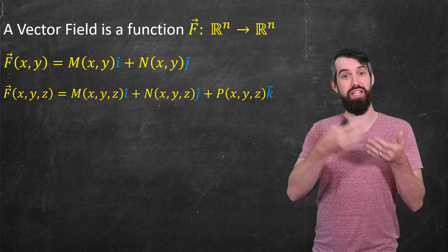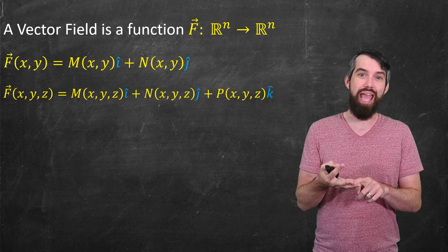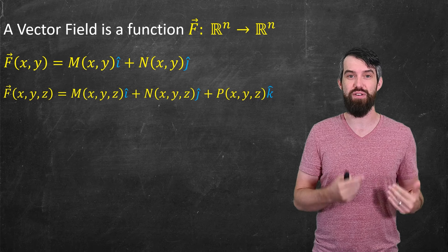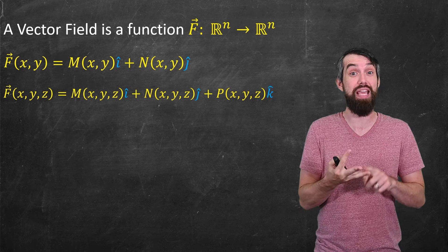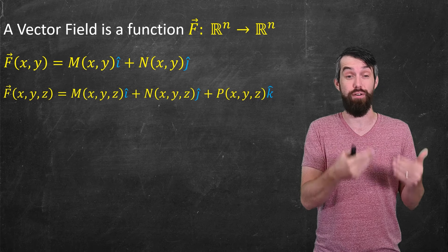So for example, we might say a vector field is continuous if the M, the N, and the P are continuous. Or we might say that a vector field is differentiable if the M, the N, and the P individually are differentiable functions.